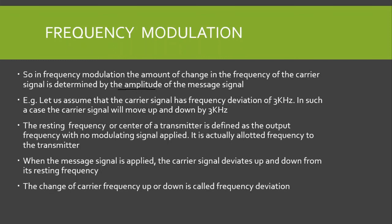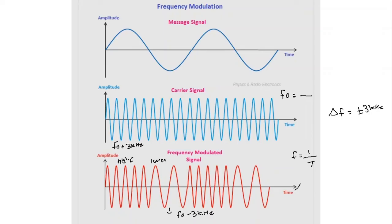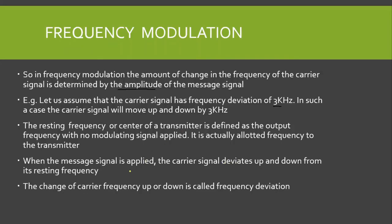The frequency deviation, denoted by delta f, causes the carrier signal to move up and down by that amount. The resting frequency, or center frequency, of the transmitter is defined as the output signal frequency with no modulating signal applied — it is the allotted frequency of the transmitter. When the message signal is applied, the carrier deviates up and down from this resting frequency, and this change is called frequency deviation, denoted by delta f.